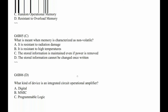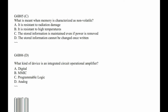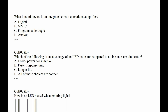G6B06. What kind of device is an integrated circuit operational amplifier? It's an analog device — believe it or not. The keyword there is operational. G6B07. Which of the following is an advantage of an LED indicator compared to an incandescent indicator? Low power consumption, fast response, long life. It's all of those — D.